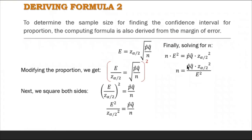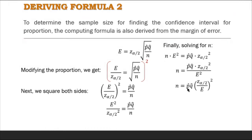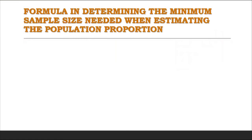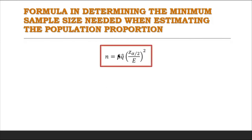So n equals p-hat times q-hat times z sub alpha over 2 squared, all over E squared. Combining the exponent, the formula in determining the minimum sample size needed when estimating the population proportion is n equals p-hat times q-hat times the square of z sub alpha over 2, all over E. If p-hat is known, use the formula directly. If p-hat is unknown, use p-hat equals 0.5, which will result in a sample size large enough to guarantee prediction given the confidence interval and error of estimate.